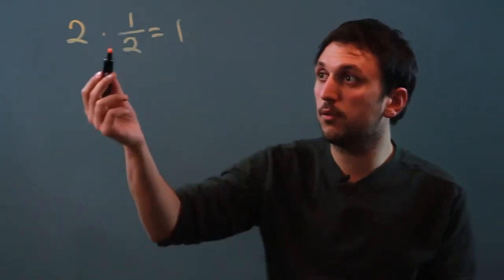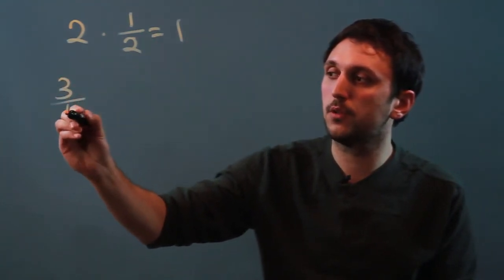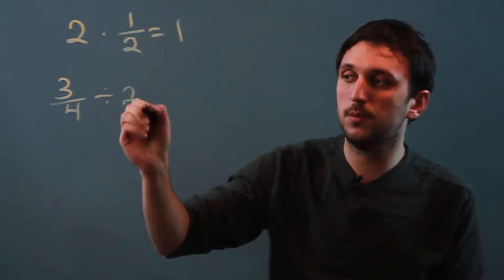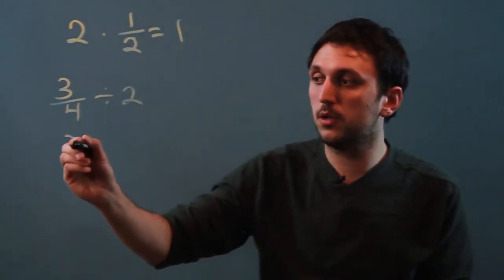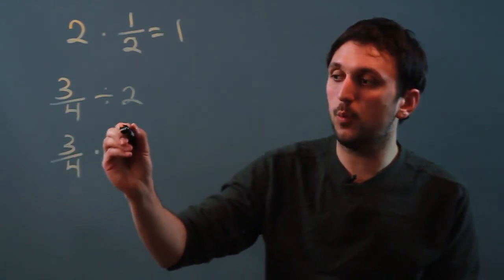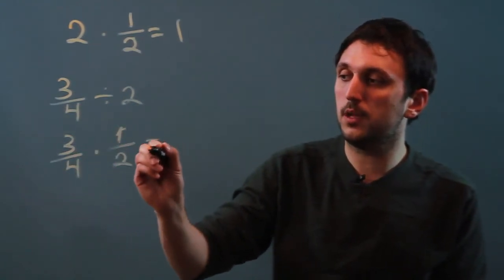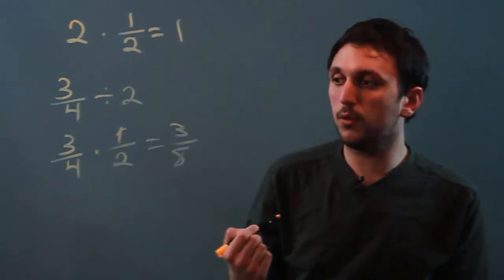So what can we use it for in more complicated ways? Well, if you want to divide, say, 3 fourths divided by 2, instead of dividing by 2, you can multiply by its reciprocal and get the same answer. So 3 fourths times 1 over 2 equals 3 eighths. That is a basic way we can use it.